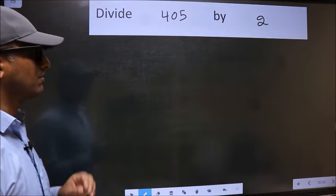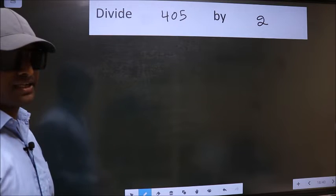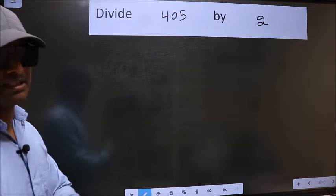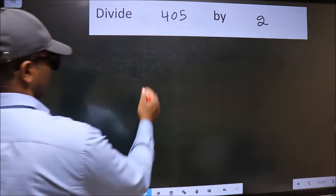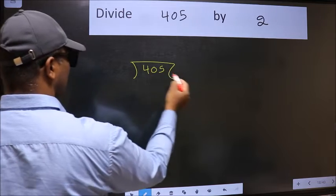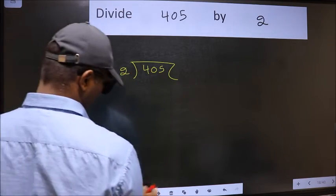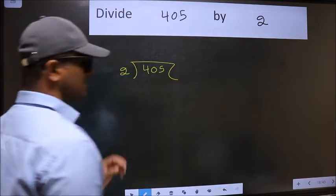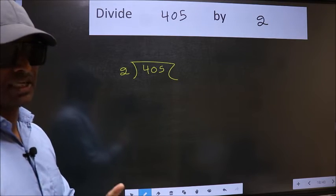Divide 405 by 2. To divide this we should frame it in this way. 405 and 2 here. This is your step 1.